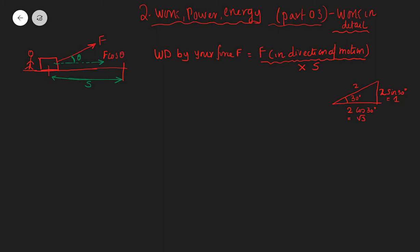In general, we say that the work done by the force is equal to F cos theta, because this is the force in the direction of motion multiplied by the displacement. So work done is F cos theta into S.